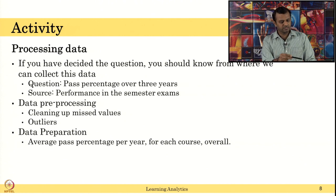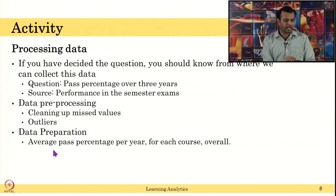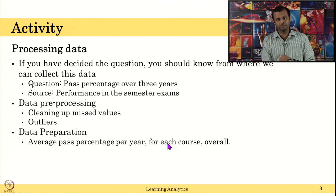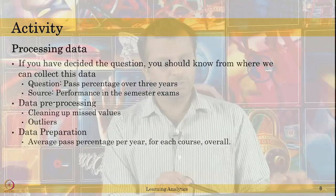After collecting data, the next step is processing — cleaning up missing values, removing outliers, making sure there are no errors. Then you have to prepare the data for representation: compute the average pass percentage per year for each course so you can show it overall. For example, if you collected all the data in Excel sheets, you have to compute the average pass percentage per year — 2015, 2016, 2017 — so that you can show it in a graph. Not just data collection, but also this data transformation is connected to the research question you are asking.